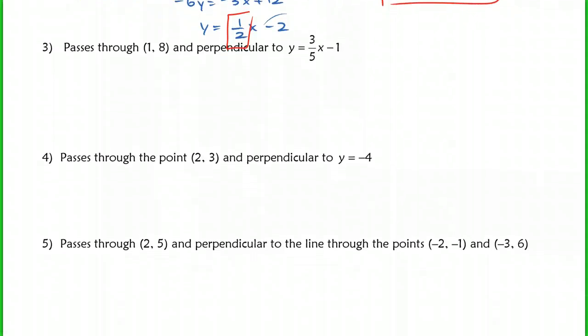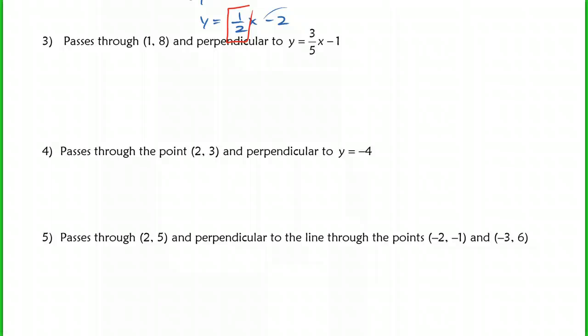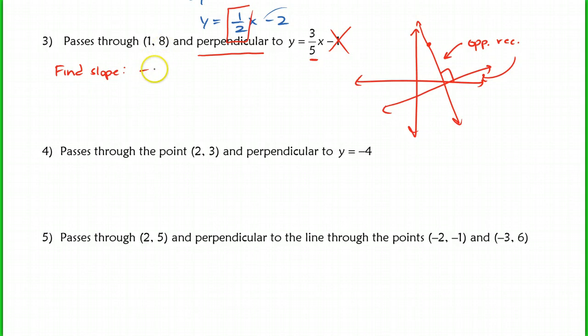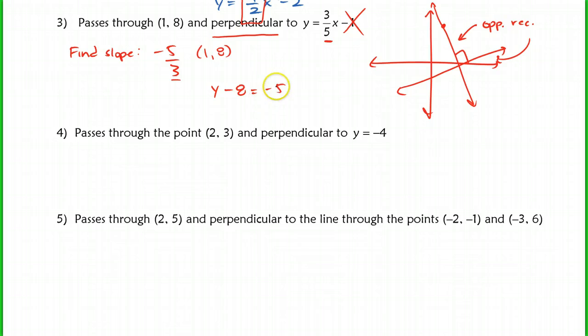The next one. This time it's going to pass through (1, 8) and be perpendicular to y = (3/5)x - 1. So this is slightly different. Now we're looking for a perpendicular line. Let's say that the equation of (3/5)x - 1 is going to look something maybe like that. We're trying to find a line through (1, 8). We already know something about that line. It's going to have opposite reciprocal slope with that line here. So I'm going to take this 3/5, and I don't care about that other number. All I'm going to look at is the slope. So to find my slope here, I take 3/5 and I take its opposite, so it would be -5/3. So now I use this slope and the point (1, 8), and I'm going to put that into point-slope form. So I have y - 8 = (-5/3)(x - 1). And this would be my final answer here.